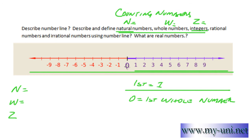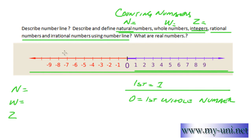Zero is a whole number — it is not a natural number or counting number. One is an integer as well as a whole number. Two is an integer, a whole number, and also a counting number or natural number. For rational numbers and irrational numbers, I'll have to make another video. Thanks very much.